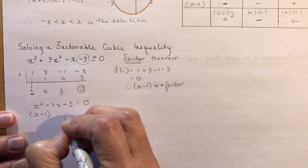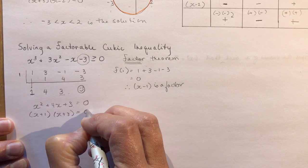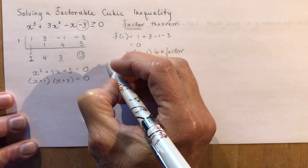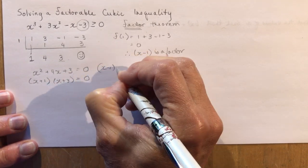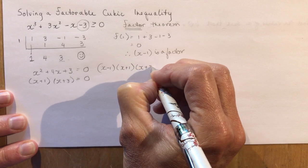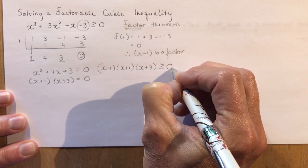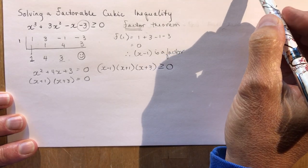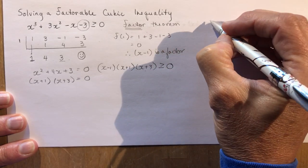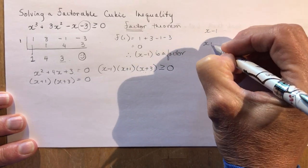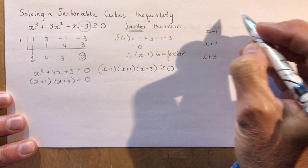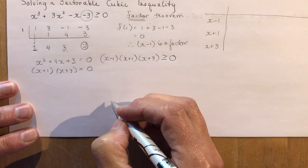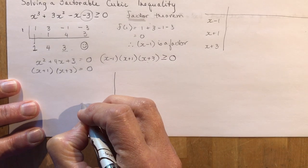Now the whole cubic is fully factored. I can write: (x − 1)(x + 1)(x + 3) ≥ 0. I want to know where that expression is greater than or equal to zero. You could make a sign table with these three intervals, but let me show you the quicker graphical method I think you should focus on understanding.